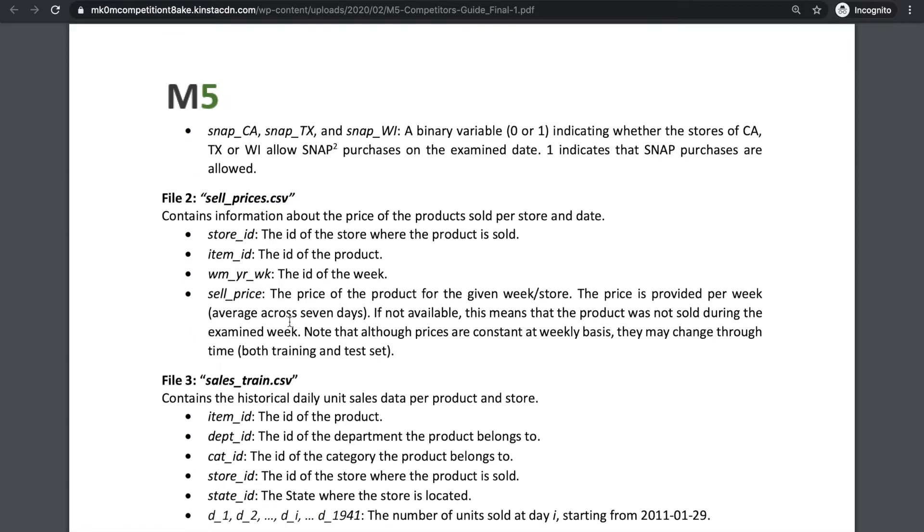The second file, called sale prices, contains information about the price for a product store date combination. As a consumer, we know that our product price often fluctuates. Sometimes it's due to inflation, especially because the historical data provided to us spans over five years, we can expect some product prices to gradually increase.